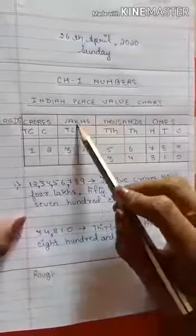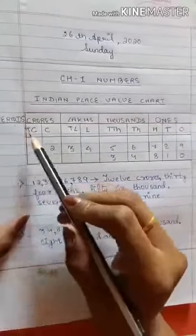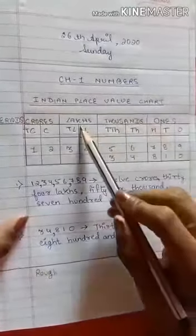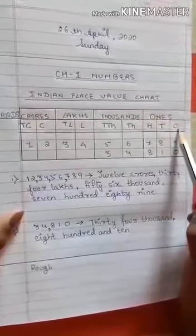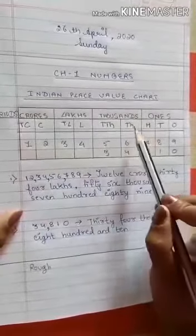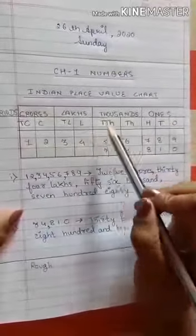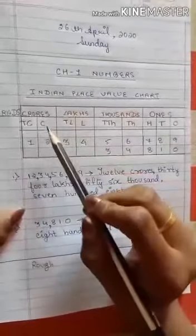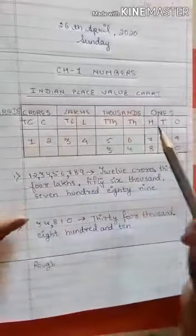Now let's see what the Indian place value chart is. If you see this chart, I have made ones, thousands, lakhs, and crores — these are called periods. So there are four periods: ones, thousands, lakhs, and crores. In the ones period there are three places: ones, tens, hundreds. In the thousands period there are two places: thousand and ten thousand. In the lakhs period there are two places: lakhs and ten lakhs. In the crores period there are two places: crores and ten crores.